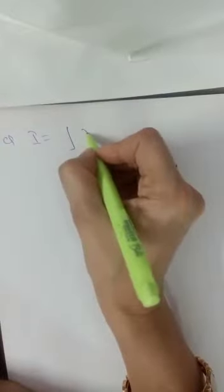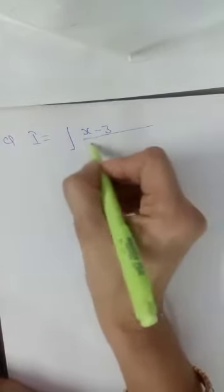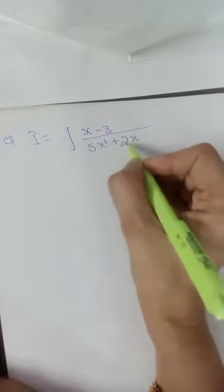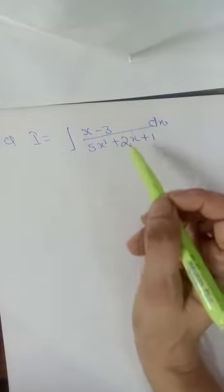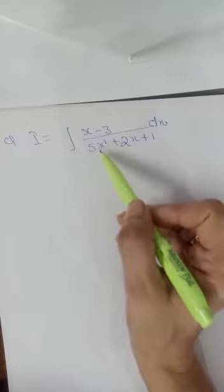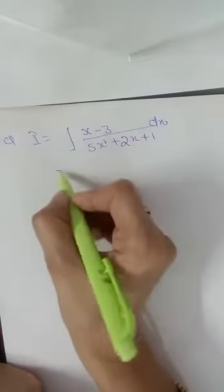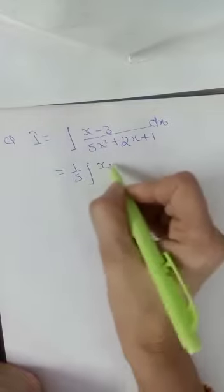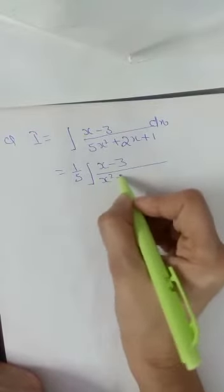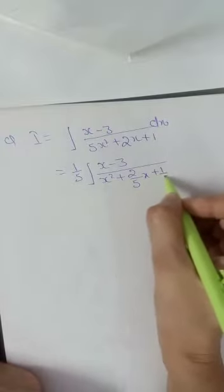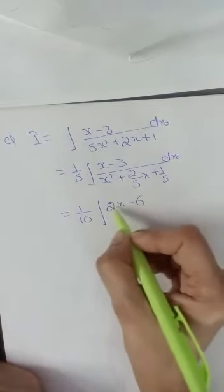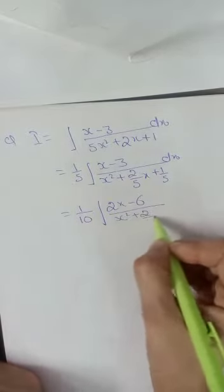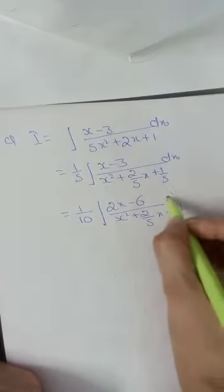Suppose we have I equals (x minus 3) upon (5x² + 2x + 1) dx. Before completing the perfect square, the coefficient of x² should be 1. So first we take 5 common from the denominator, giving (x minus 3) upon 5 times (x² + (2/5)x + (1/5)) dx.